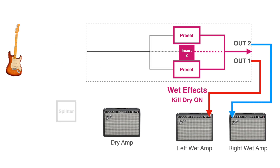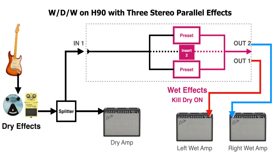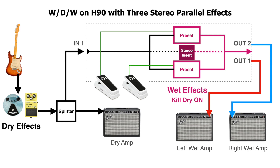Another parallel mixing option is to use an external analog splitter before the H90 to split signal to our dry amp, then use the H90 as a 3-way stereo wet effect parallel mixer by employing the stereo insert. In advanced wet/dry/wet rigs, each wet effect has its own volume control. Similarly on the H90, we can use the extensive expression mapping to control wet effect levels and create custom multi-parameter ranges of control for effect depths and/or feedback levels.